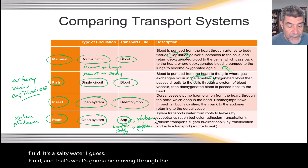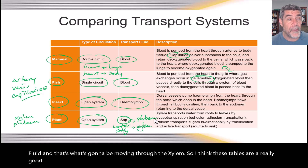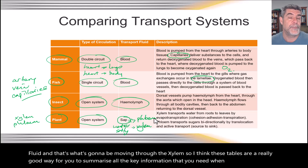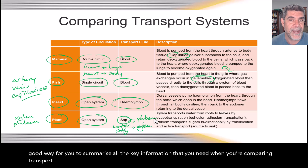These tables are a really good way to summarise all the key information you need when comparing transport systems between animals and plants. Thanks for watching.